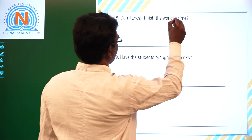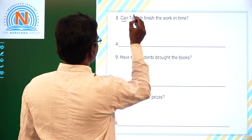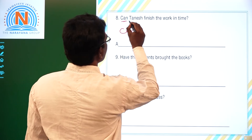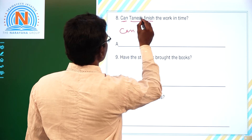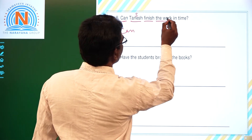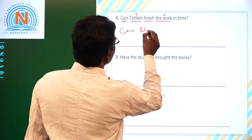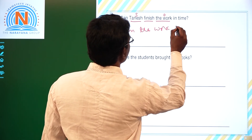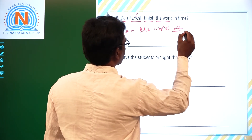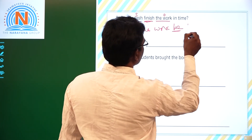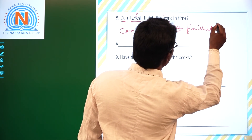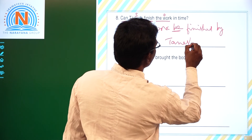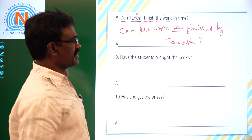Eighth one: 'Can she finish the work?' When the sentence begins with 'can,' our answer should also begin with 'can.' 'Can' is the helping verb, 'finish' is the main verb, 'she' is the subject, and 'the work' is the object. The object becomes the subject. We use 'be' and V3 of 'finish' is 'finished.' Answer: 'Can the work be finished by her?'